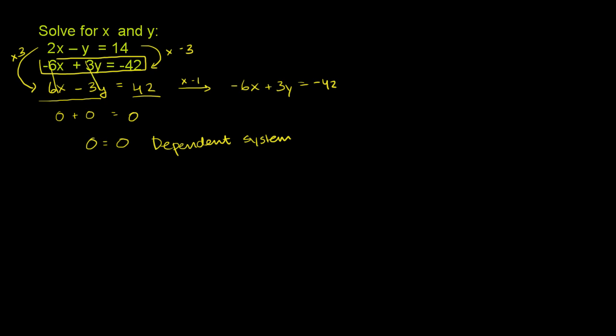So if you were to graph them, and I might as well graph them for you right here, this first equation right here, let me do it over here. It's 2x minus y is equal to 14. You can subtract 2x from both sides. And you would get, let me just subtract it. Subtract 2x, subtract 2x.